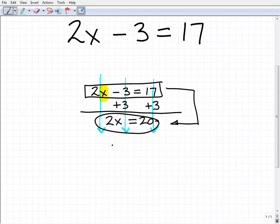Let's finish this up. We've got 2x equals 20. Remember, the objective is to get x by itself. To do that, divide both sides of the equation by 2.